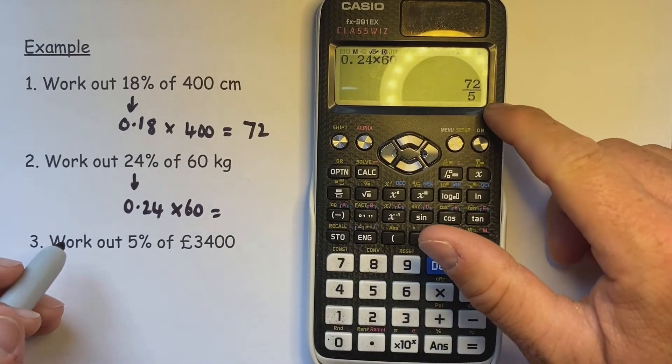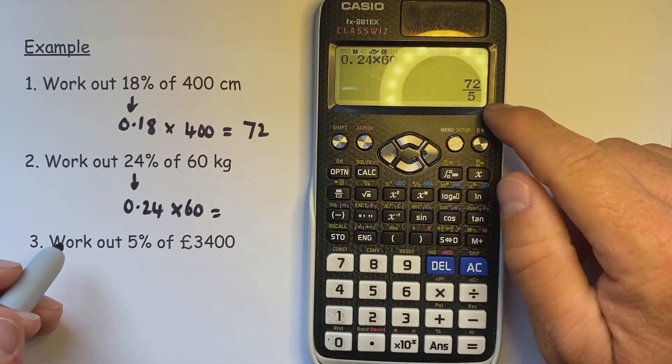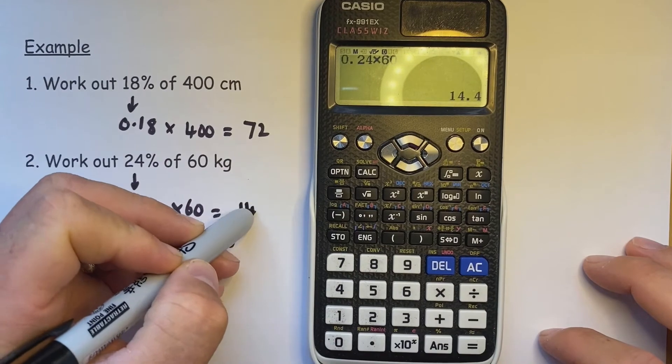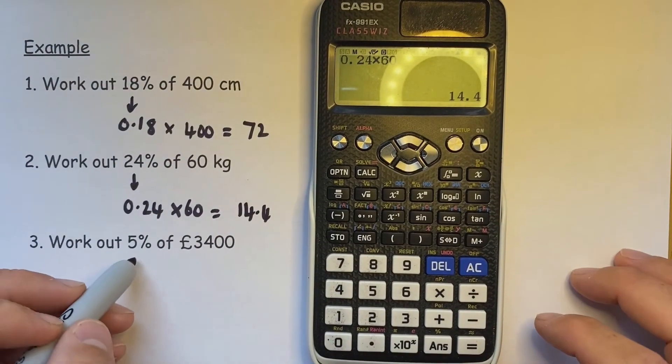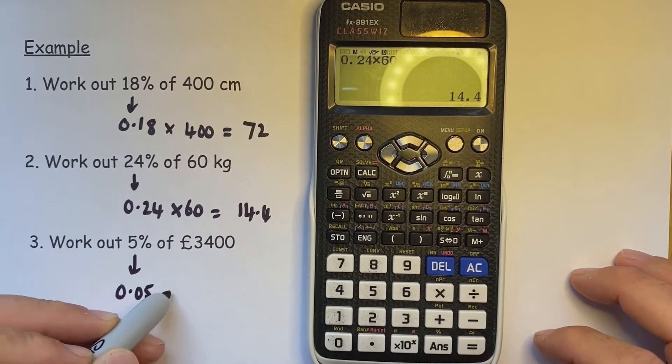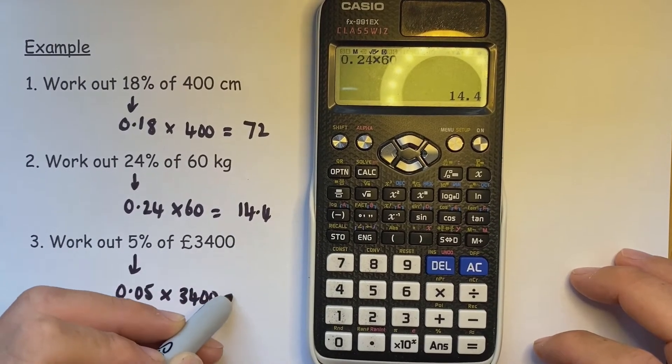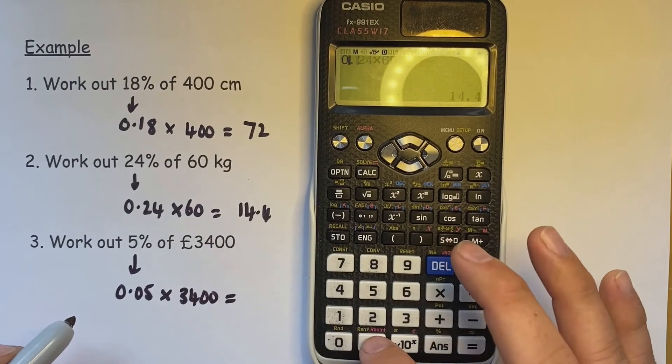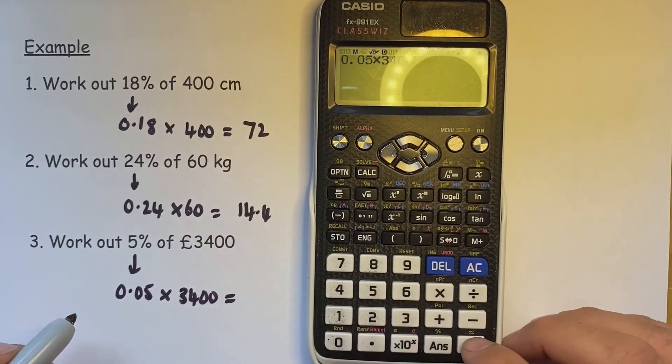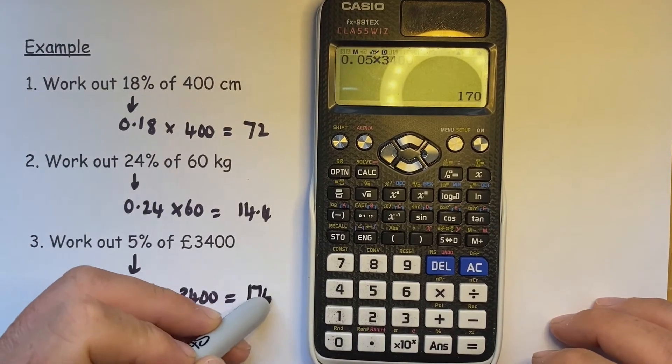This one comes out as a fraction answer on the Casio. We press the SD button and we see that that is 14.4. 5% divided by 100 is 0.05 of 3400, so we've got 0.05 times 3400 equals 170.